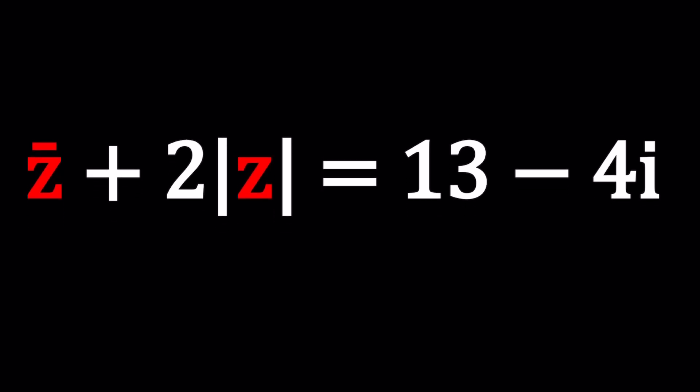Before we start solving the problem, if this was a multiple choice question we could quickly test the choices, right? Now we have to solve it. Sometimes they make the problem harder or nearly impossible to guess. For example, they give you choices for this type of problem but they ask you for the absolute value of z or something like that, which means you can't just test the choices. How do we come up with these problems? Start with z and then make up an equation.